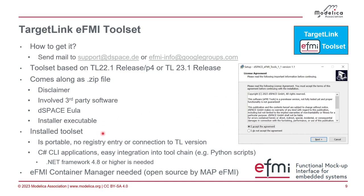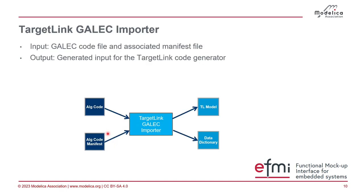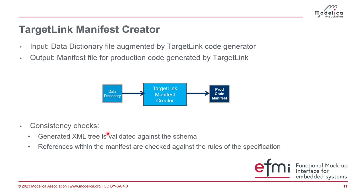The installer is very simple, and the ToolSet itself is just a command-line interface application — you need a bash or PowerShell or something like that. First you need your algorithm code and the manifest. Put it through the eFMI importer, and what you get is a TargetLink model and a data dictionary. On the other side, you take the manifest creator — giving an input data dictionary — and what you get out is the production code manifest. Then you use the container manager to put it all together.